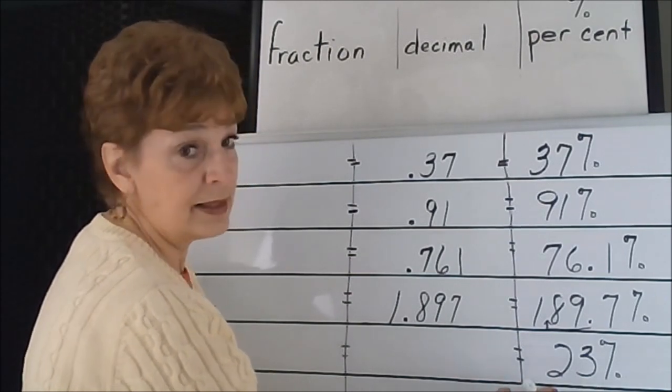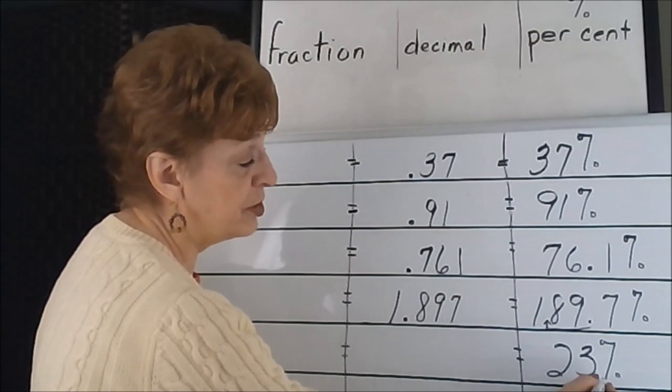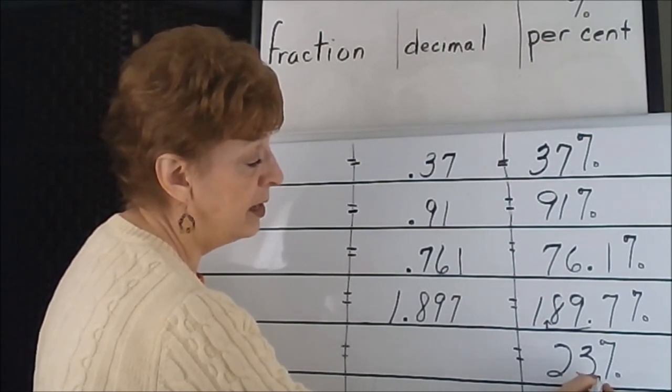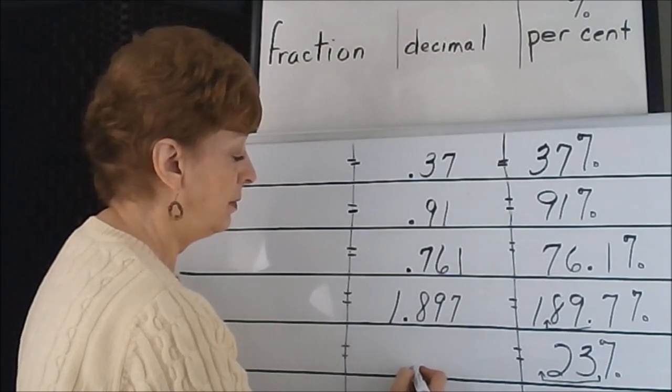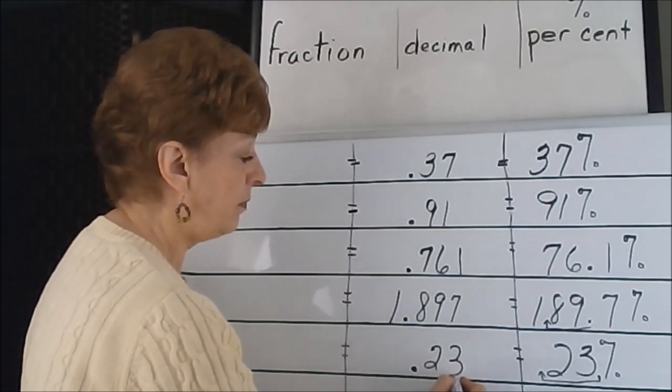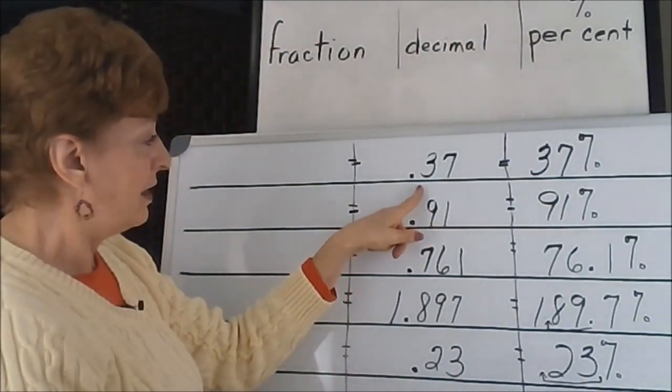There's only two places in this 23%, so we're just going to visualize our decimal point here, moving it two places to the left this time: 0.23. Now we have our equivalent decimals.